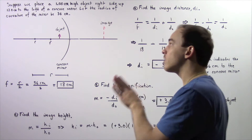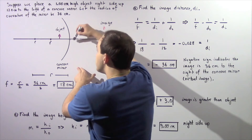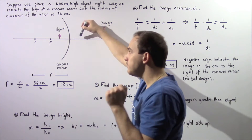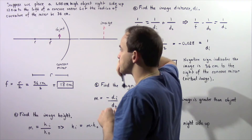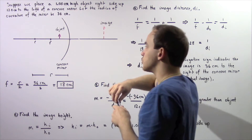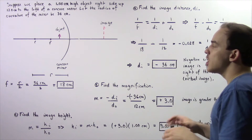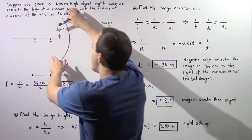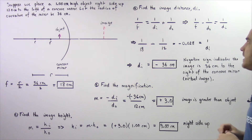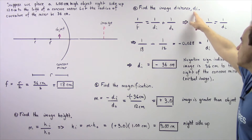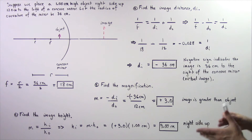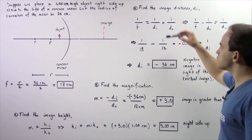Notice that our object is placed between the center of our concave mirror and the focal length. In the previous lecture, we saw that the object was placed between the focal length and our radius of curvature. Now we're going to discuss what type of image is formed when the object is placed between these two points. Let's begin with part A: find the image distance di, applying the mirror equation derived in a previous lecture.